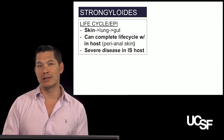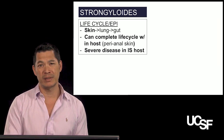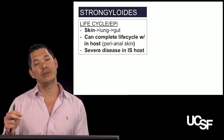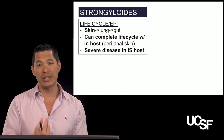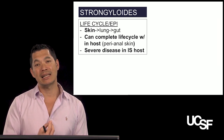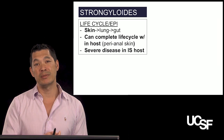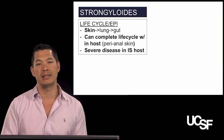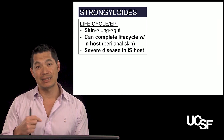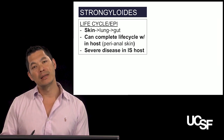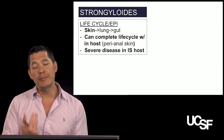This is where strongyloides is a little different. Strongyloides is the only parasite that can complete its entire life cycle in the human, and it can be a long time between exposure and disease. As adult worms mature in the GI tract making eggs, those eggs hatch into larvae. The larvae can burrow straight from the mucosa back to the lungs, and if you're immunosuppressed, they can migrate to all parts of the body including the brain and skin.